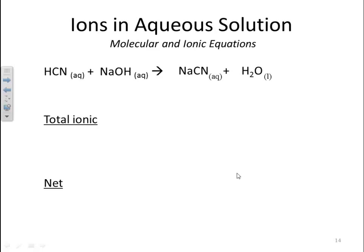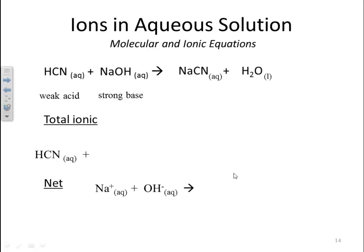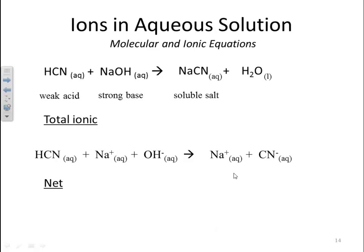For the total ionic, we break up things that ionize 100% — strong acids, strong bases, and soluble salts. HCN is a weak acid, so it doesn't break up 100%; we bring it down just like it is. Sodium hydroxide is a strong base, so we break it up into ions. Sodium cyanide is a soluble salt, so we break it up into ions. We bring down the water.